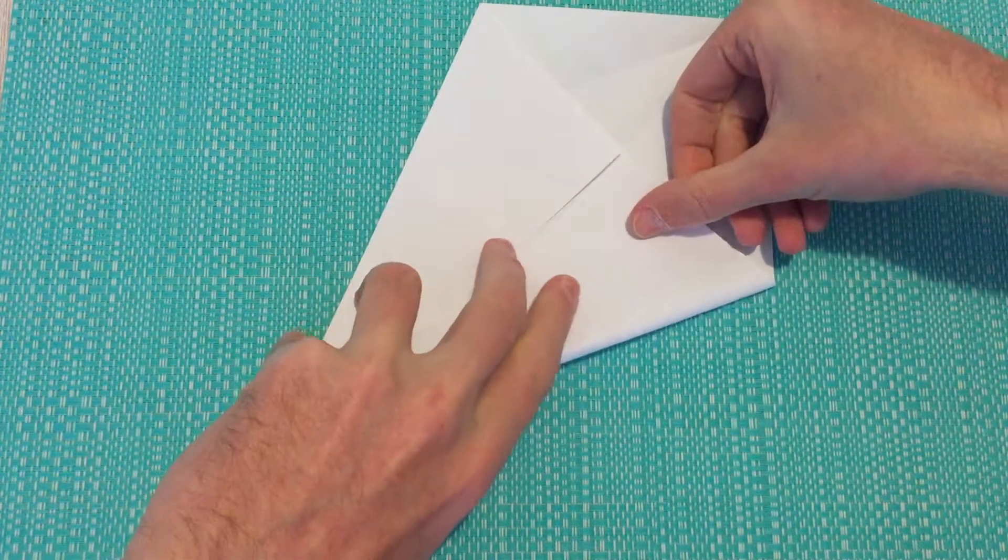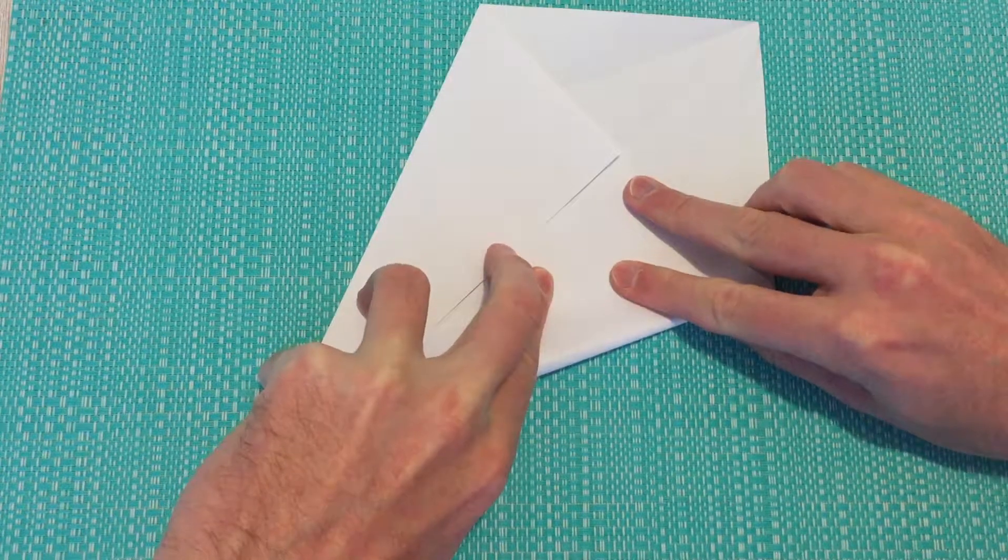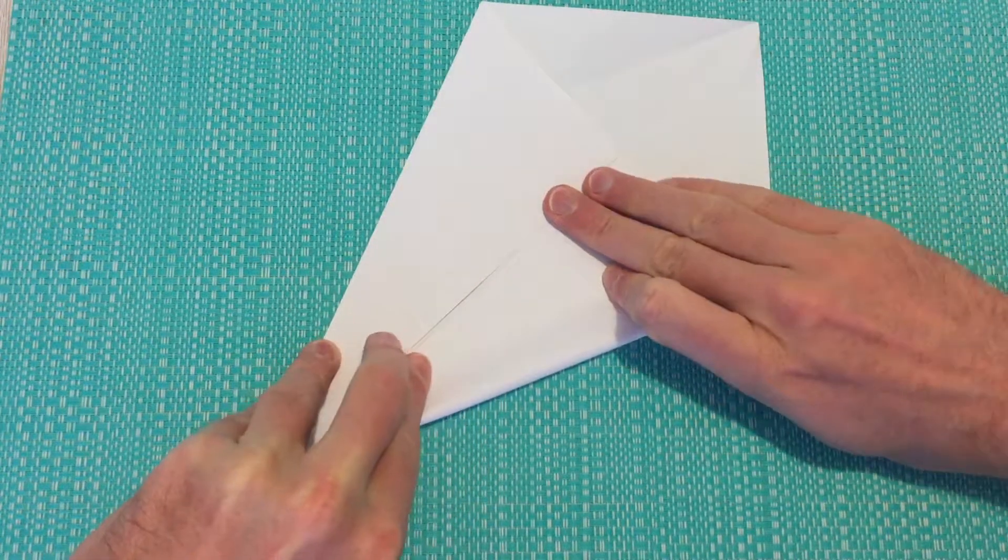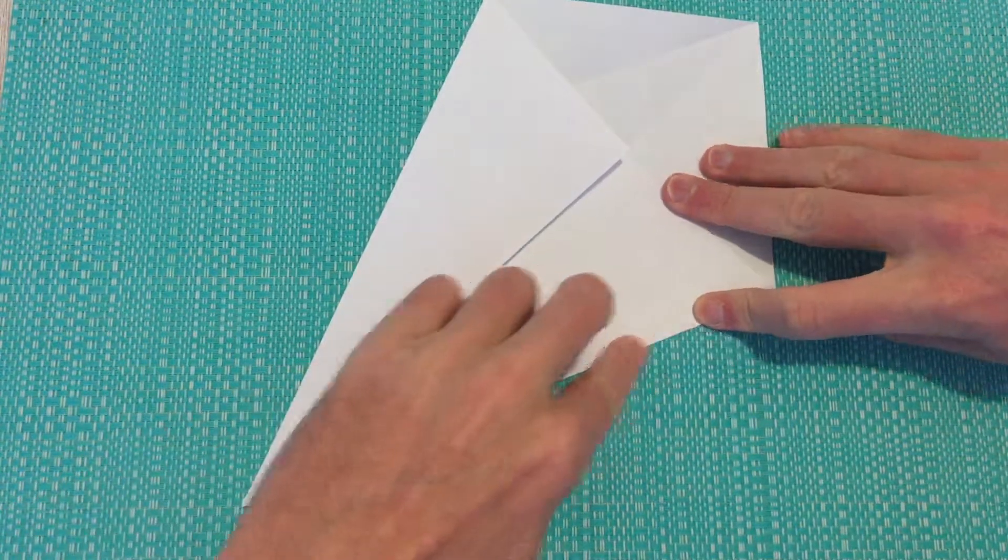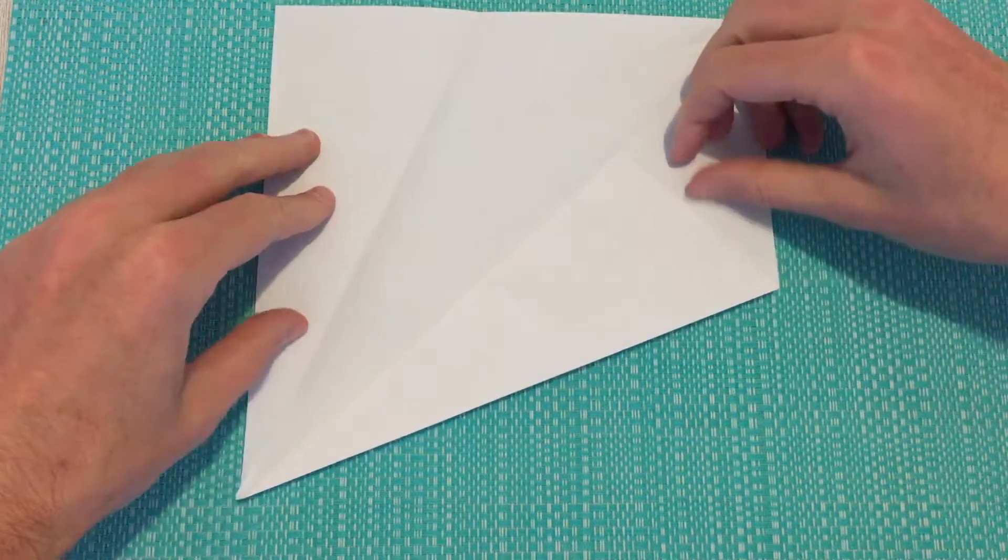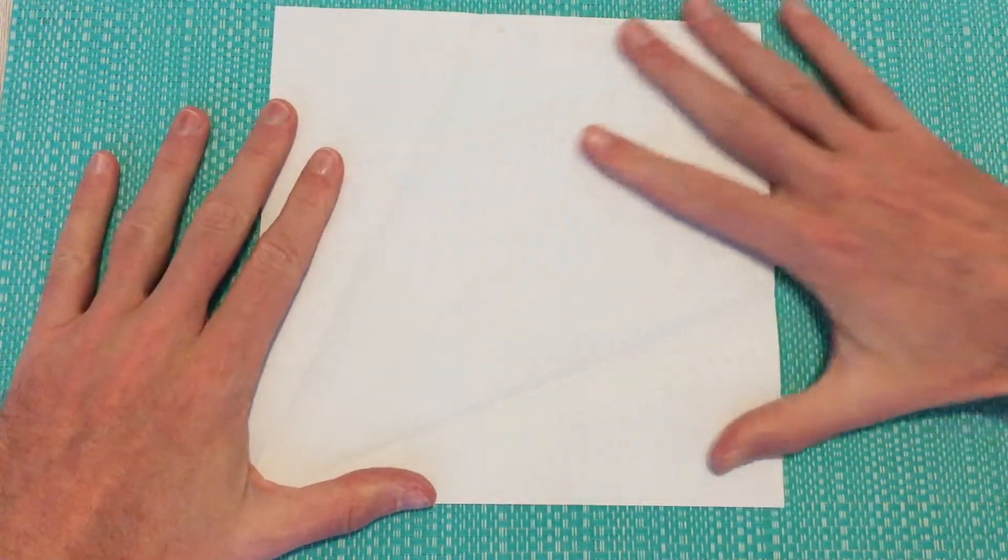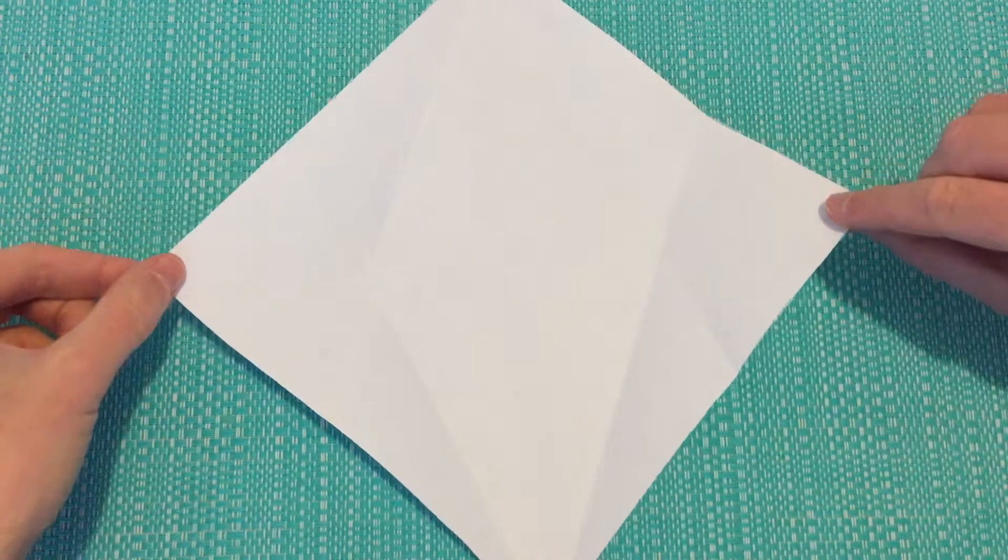It's important to get the first folds of any origami project accurate. As if they're off, it will throw the whole project off. Okay, we can now open those two folds as well. We'll now rotate our project slightly, just into a diamond shape.